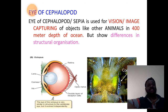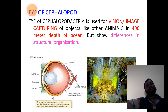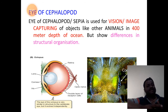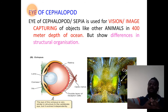Let us understand the first example: the eye of cephalopod or sepia eye. The major function we consider as a common function of the eye, either of the cephalopod or of the vertebrate, remains the same.